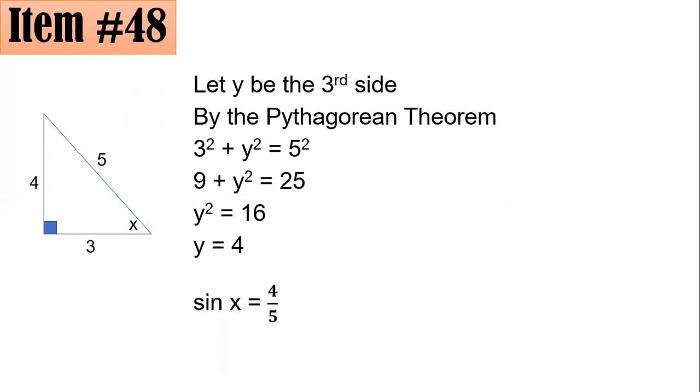But remember, it follows also that the value of sine x—sine is opposite over hypotenuse. So opposite is 4, hypotenuse is 5. So sine x is 4/5.